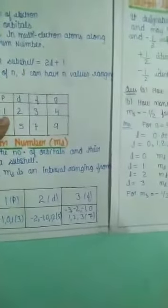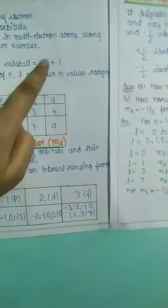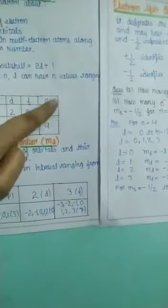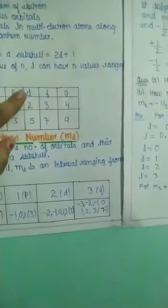The number of orbitals in a subshell is given by the formula 2l+1. For S, l=0, so 2(0)+1 = 1 orbital. For P, l=1, so 2(1)+1 = 3 orbitals. Similarly for D there are 5 orbitals, for F there are 7 orbitals, and for G there are 9 orbitals.